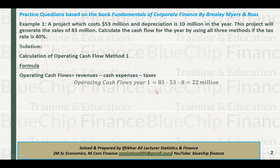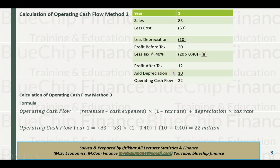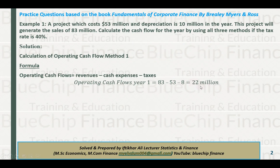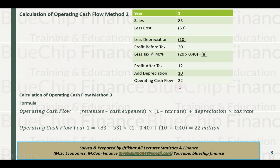Formula number 1: revenues minus cash expenses minus taxes. Revenue is 83 million, cash expenses 53 million, and taxes are 8 million — result is also 22 million. Formula number 3: (revenues minus cash expenses) multiplied by (1 minus tax rate) plus depreciation multiplied by tax rate. So (83 minus 53) times (1 minus 0.40) plus 10 times 0.40 — this also gives 22 million.